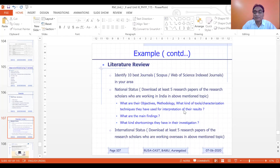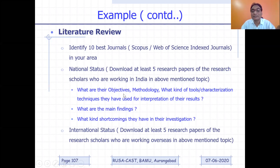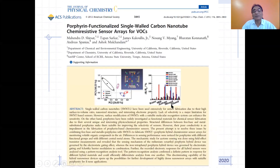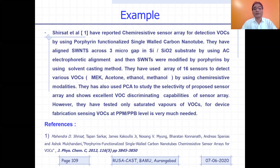Now I am going to share another screen. I was talking to you about this — from that paper, you will be able to understand: what are their objectives, methodology, what kind of tools and characterization techniques they have used for interpretation of research, what are their main findings, and what kind of shortcomings they have in their investigation. Like that, if there are five papers, there would be five paragraphs — one paragraph for each paper. And similarly, you will have to do the international status — download at least five papers from researchers working overseas in the above-mentioned areas.